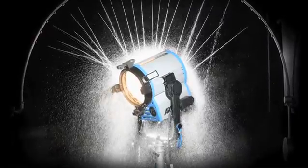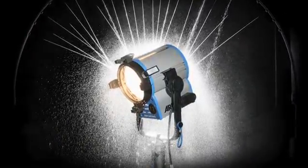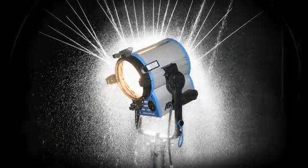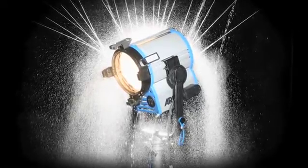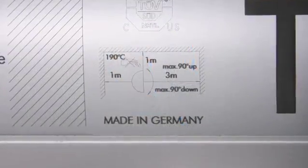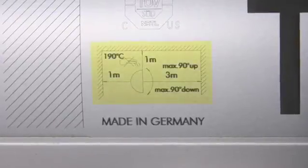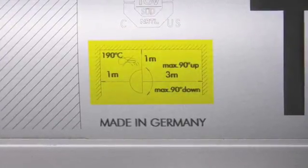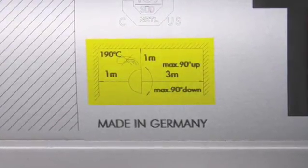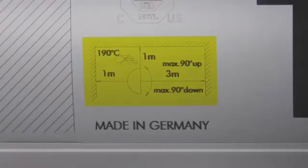True Blues are also manufactured to the IP23 standard, providing a degree of protection against falling rain up to a 60-degree angle from vertical. However, always pay attention to the diagram printed on the side of every True Blue fixture. This diagram provides the recommended tilt angles and clearance distances.